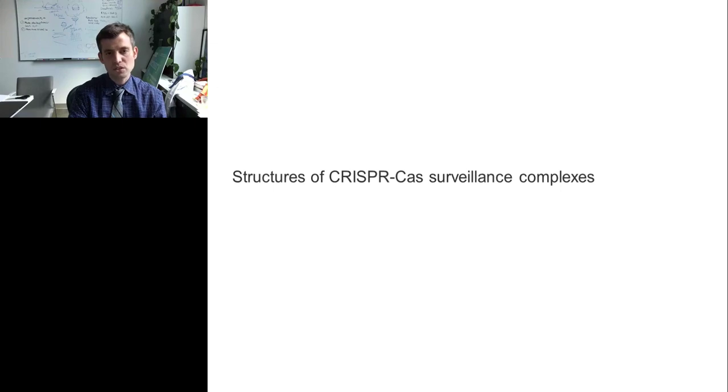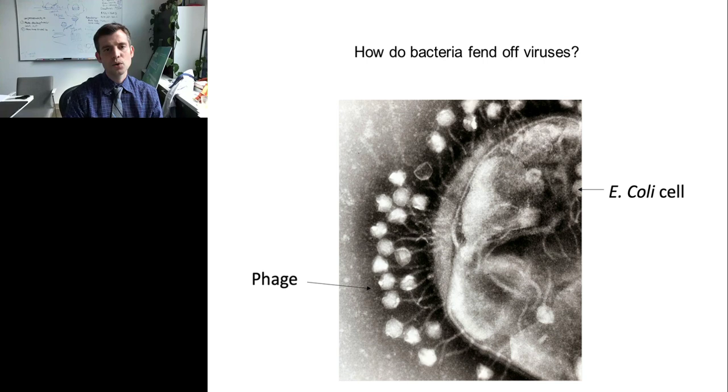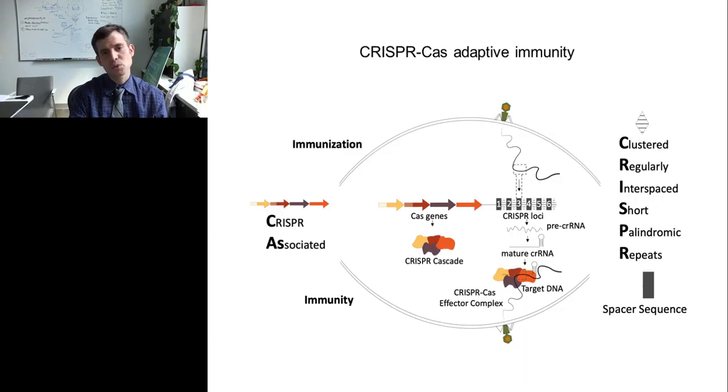So, the first thing I want to talk about is structures of CRISPR-Cas surveillance complexes. What is CRISPR-Cas? Here's an electron micrograph of an E. coli cell being attacked by phages. These phages are attaching to the E. coli cell, and they're injecting their viral genome into it, with the idea of infecting it and killing the E. coli cell. One mechanism that bacteria have come up with to fend off these phage infections is CRISPR-Cas systems, a type of adaptive immunity.